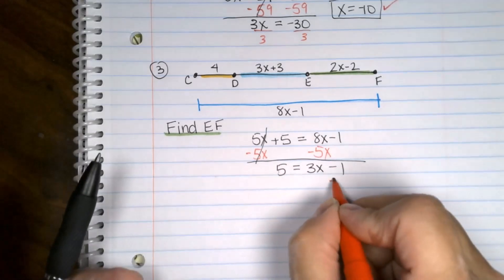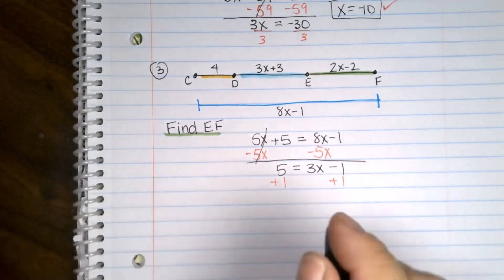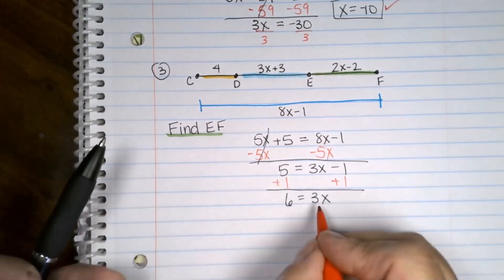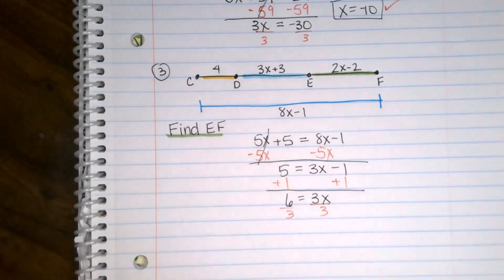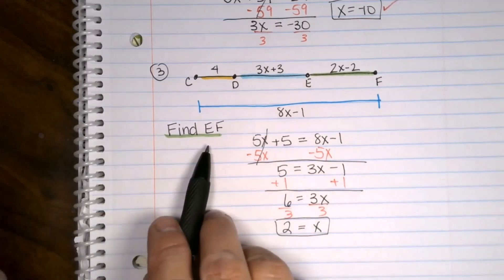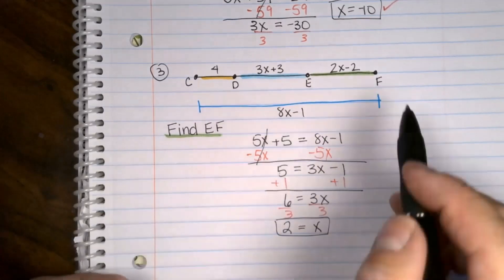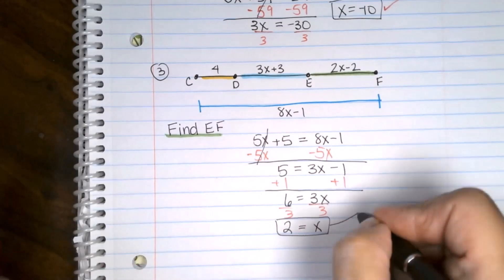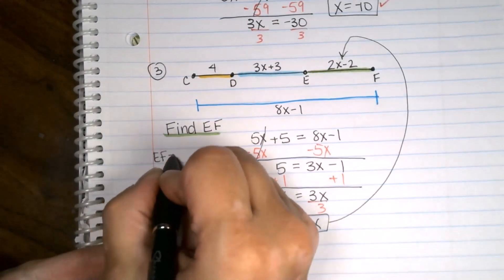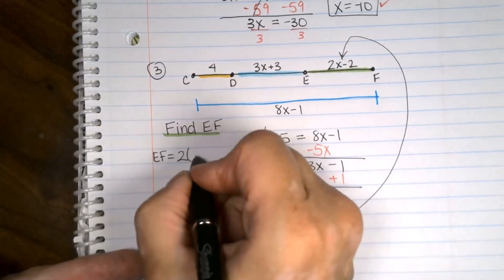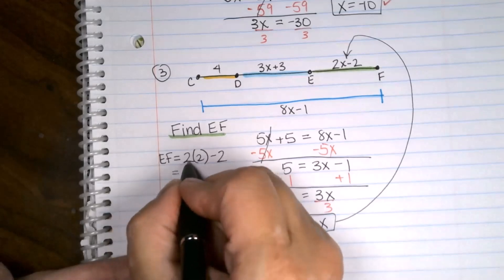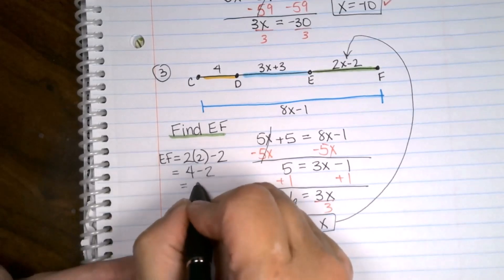Now solving, we have to add the 1 to both sides. And we get 6 equals 3X. And then we're going to divide both sides by 3. And I'm coming up with X equals 2, which is freaking awesome. But that is not what we wanted. They wanted us to figure out what EF was. Well, that means we're going to take this little guy and plug it in right there. So EF equals 2 times this 2 minus another 2. Well, isn't that sweet? They all match. They're matchy-matchy. 2 times 2 is 4 minus 2. And we get an answer of 2.